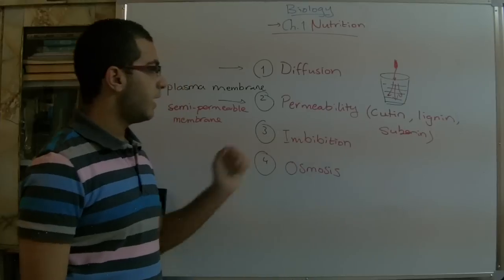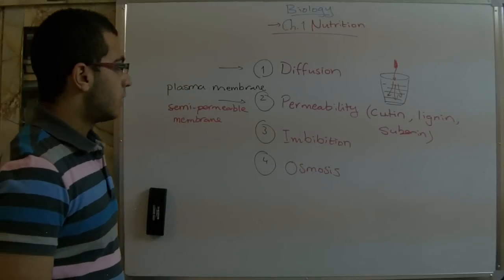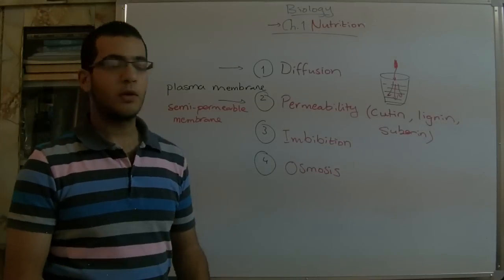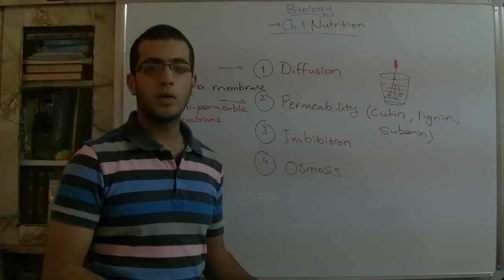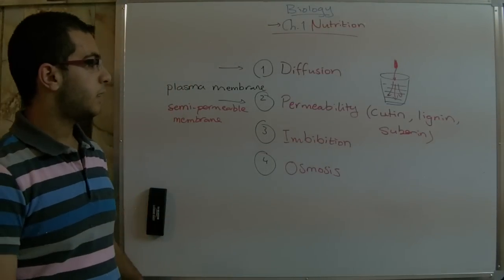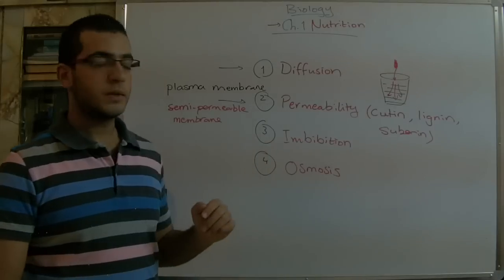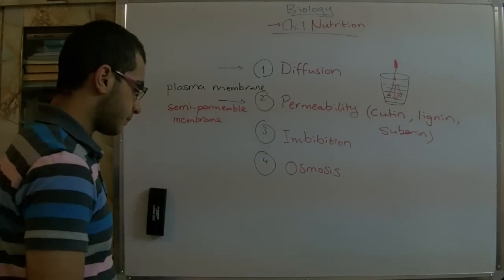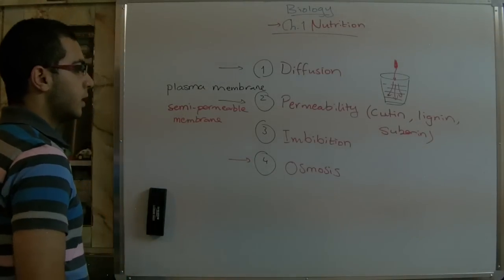The third method involves large molecules, especially colloidal ones, which can absorb water from the surrounding medium and store it, then move it inside. We can notice that the surface area of the root is covered with colloidal substances or molecules which draw water from the outside to the inside.